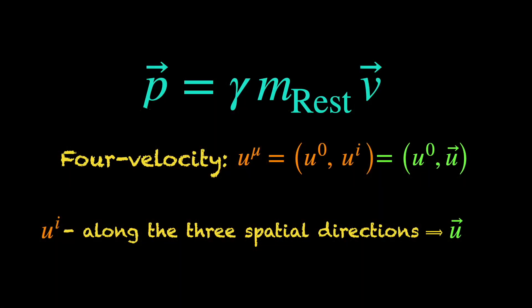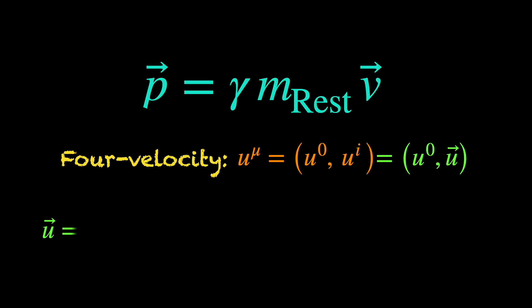Now, we need to be a bit careful here. Although this u-vector is the 3-dimensional vector part of the 4-velocity, but it is not exactly the 3-dimensional velocity vector v that we are all familiar with. It is rather the Lorentz factor gamma times the ordinary velocity vector v.